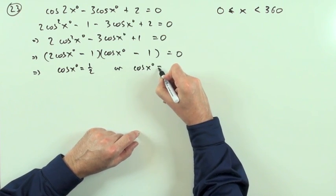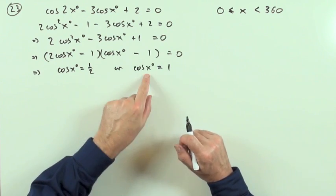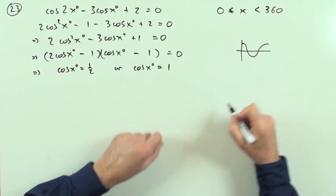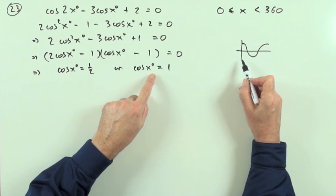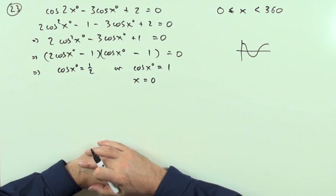I can answer these just from the graph. That first one, that's easier. You just think of the cosine graph: starts at the top, loops down. When is the cos of x equal to 1? That happens when x is 0.